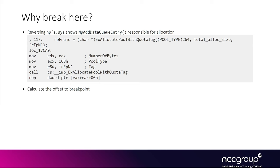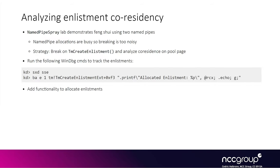The lab we are going to work on is called Name Pipe Spray. It relies on two named pipes to do alternate allocations, then frees all the chunks from the second named pipe to create holes. If you want, you can then add code to reallocate the k enlistments into those holes, so the KENLISTMENT chunks will be between two named pipe chunks.